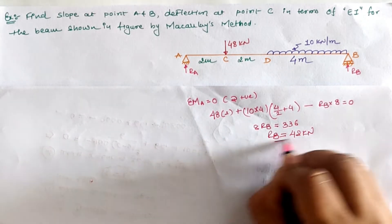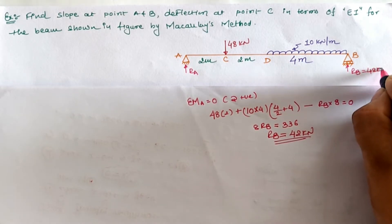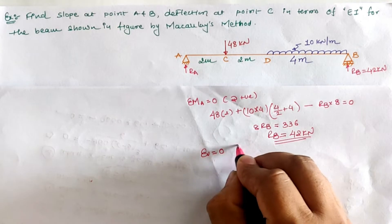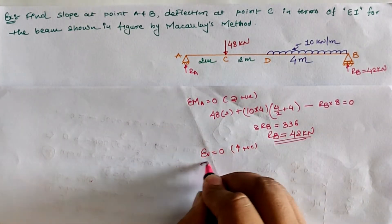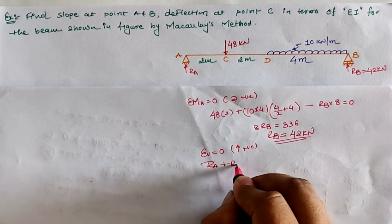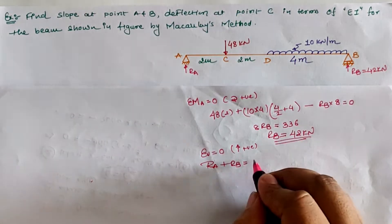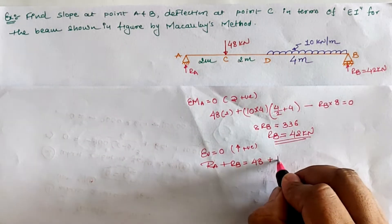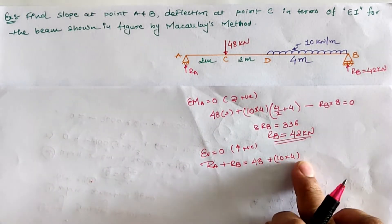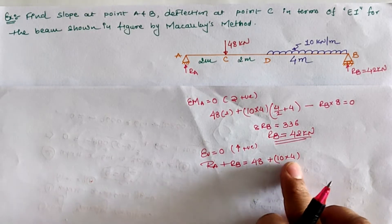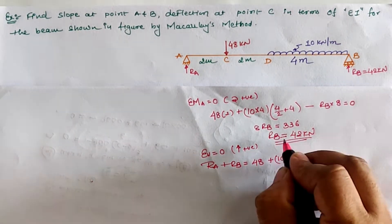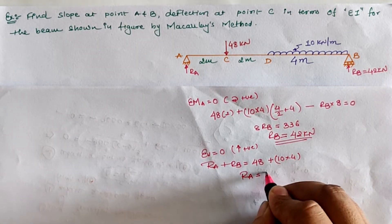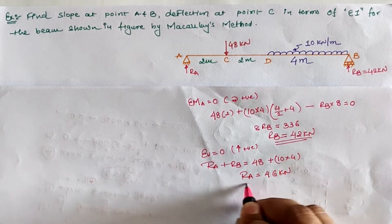Solving this equation gives RB equal to 42 kN. Using the second equilibrium condition, sigma V equals zero: RA plus RB equals the total downward load of 48 plus 40 equals 88 kN. Substituting RB as 42, we get RA equal to 46 kN.